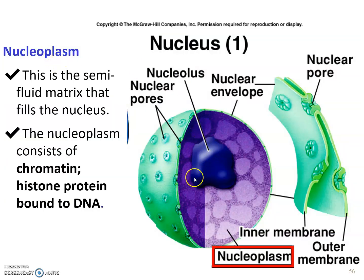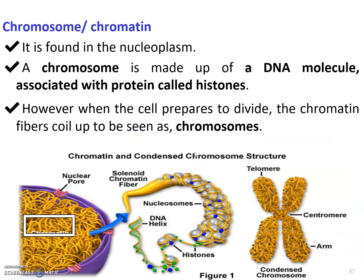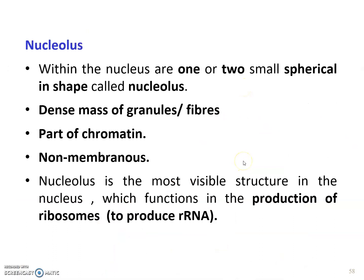Nucleoplasm is the semi-fluid matrix that fills the nucleus — something like the cytoplasm of the cell. Inside the nucleoplasm, we can find chromatin, which is histone protein bound to DNA, mainly made of genetic materials. Chromosomes can be found in the nucleoplasm, made up of DNA associated with histone protein; this applies only to eukaryotic cells. Inside the nucleus, we also have the nucleolus. The nucleolus is the most visible structure in the nucleus and functions to produce ribosomes.